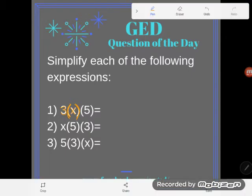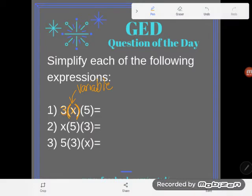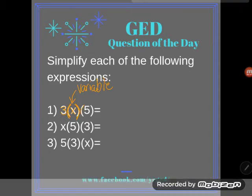Anytime you see that, when the only thing between two numbers - and remember a variable, a letter is just some unknown number, so X is some number that hasn't been named - but anyway, anytime you have parentheses between two numbers, it's telling you to multiply. So this says 3 times X times 5.